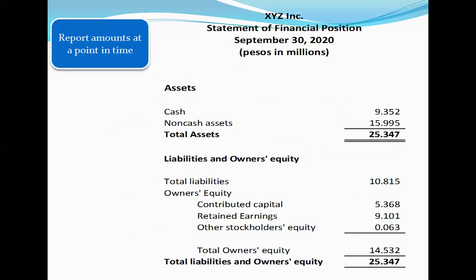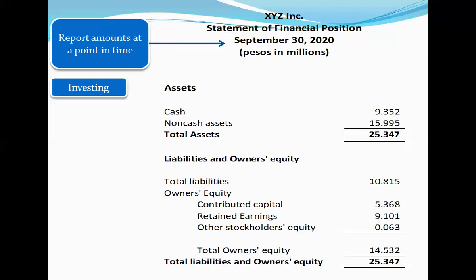Now take a look at this example of the statement of financial position of XYZ Incorporated. This portion shows that the statement of financial position reports amounts at a point in time — September 30, 2020. The assets here represent investing activities. The statement of financial position is organized like the accounting equation, where investing activities are represented by the company's assets.